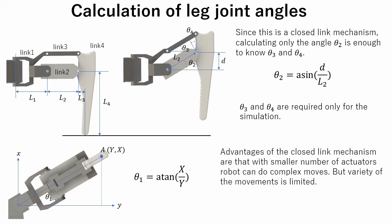Advantages of the closed link mechanism is that with smaller number of actuators robot can do complex moves. But variety of the movements are limited.